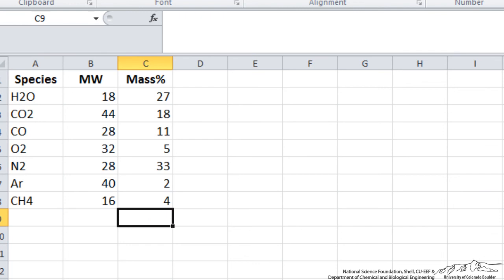If we wanted to calculate the average molecular weight given these mass percents and then have a spreadsheet that does it if we change the mass percents up, or we could also do it for a mole percent, then we need to enter in some equations. The first thing we need to do is convert to mass fractions, so I would type in mass fraction and then take each of these and divide by 100.